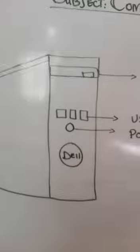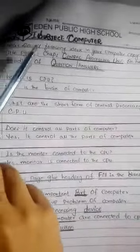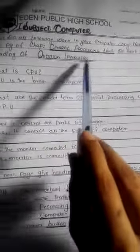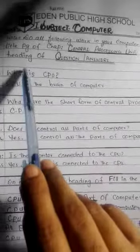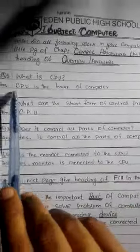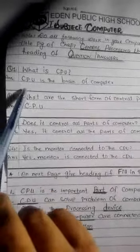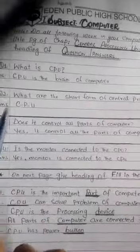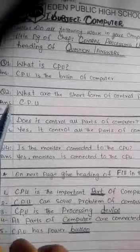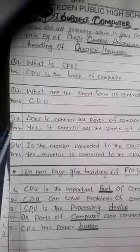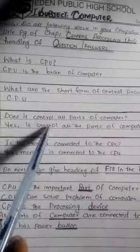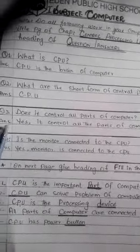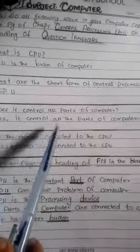Now come to your assignment. Okay student, this is your first assignment of December. आपका chapter है Central Processing Unit। इसका title page बनाएं Central Processing Unit का। हमारा number one work है question answers। Number one question क्या है? What is CPU? Answer — CPU is the brain of computer. Question number two — what is the short form of Central Processing Unit? अभी हमने discuss किया था — Central Processing Unit के short form को हम CPU कहते हैं। Question number three — does it control all parts of computer? इसका answer है — yes, it controls all parts of computer।